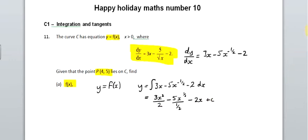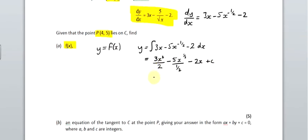Now I'm going to tidy that up. I've got 3x squared over 2, 5 divided by 1 half is 10, so it's minus 10x to the half minus 2x plus C. I don't know what the C is, so I'm going to use the point they give me.